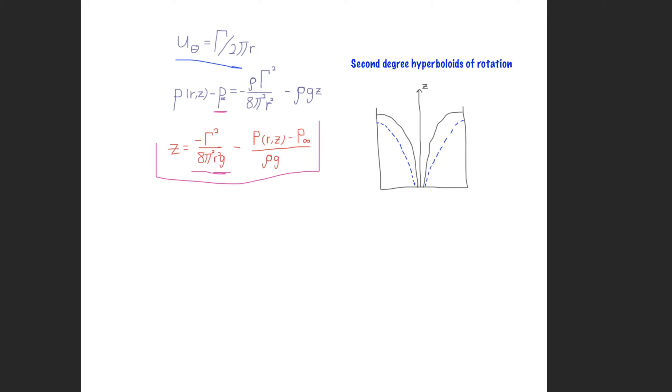And so these lines here, these ones that are going down towards z, these are our lines of constant pressure. So along these lines, we have constant pressure.